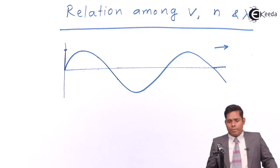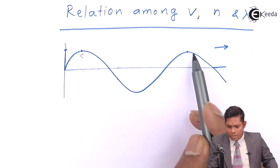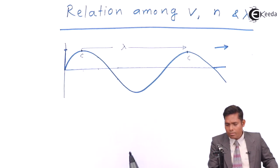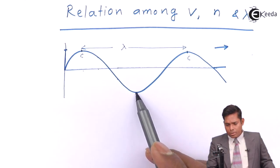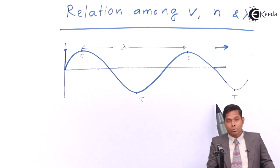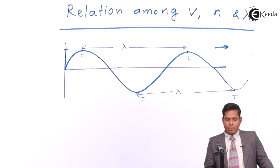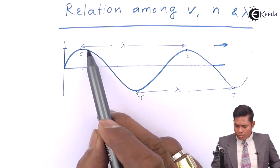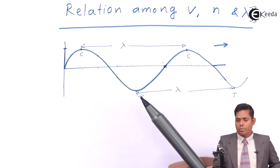What is wavelength? Wavelength is the distance between two successive crests. This is a crest, and this is also a crest — the distance between two successive crests is known as wavelength. Similarly, the distance between two successive troughs is also known as wavelength. Or you can say the length of a single wave is called wavelength. So this is one wavelength, and this is another wavelength.